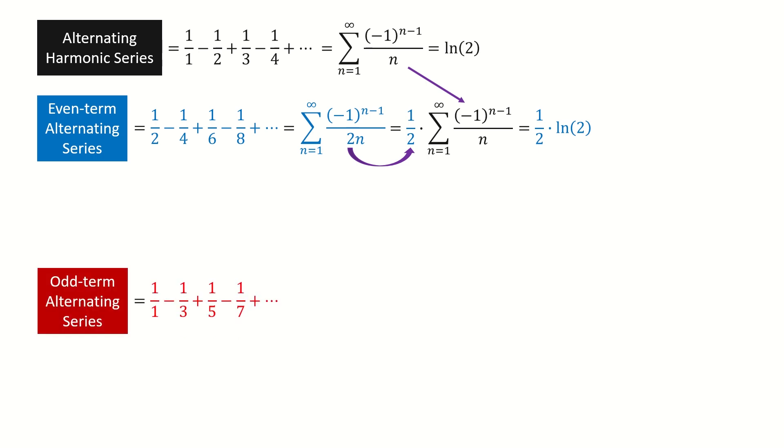Next, let's solve the odd-term alternating series. We write it into a compact form.